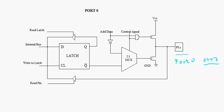Whenever we write any data onto a pin, the data is first written onto the latch and then it is transferred to the output. This is a D-type latch. We write either 1 or 0 to the input and when we enable this latch through this pin, the data — the input is available. It is visible at the output and this is just the complement of the output.